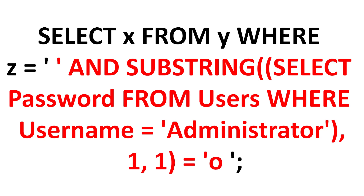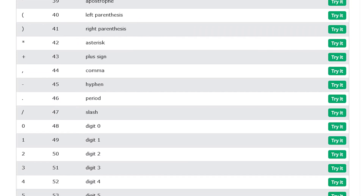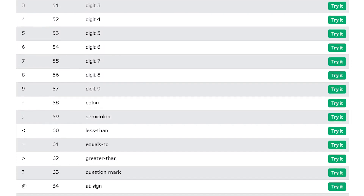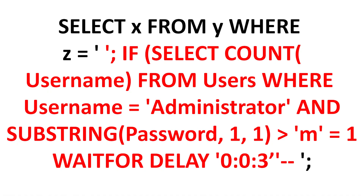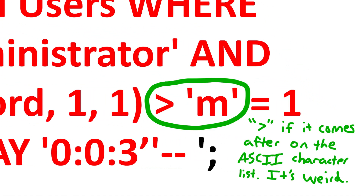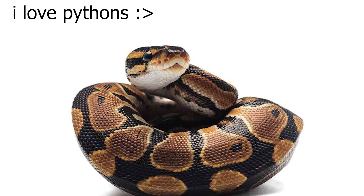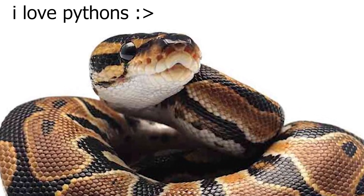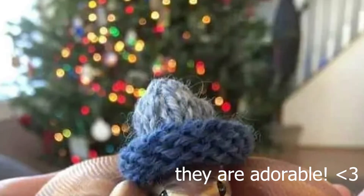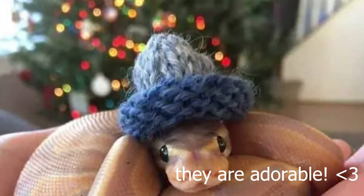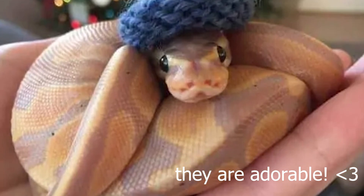One common trick is to see if the target character equals A, B, C, and going down the list of possible characters. A more advanced trick is to see if the target character is greater than or less than other characters, which can cut down on runtime, but it's a little more tricky. I'd strongly recommend creating a Python script to do this for you, since blind SQL injection takes a lot more requests to get information than a normal SQL injection would.